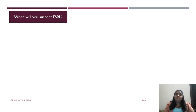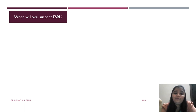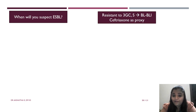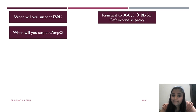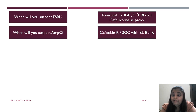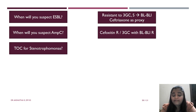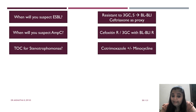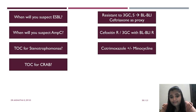That concludes the guidance. Now for a rapid fire summary: When will you suspect ESBL? When resistant to third generation cephalosporins but sensitive to BLBLIs — ceftriaxone can be used as a proxy to suspect ESBL. When will you suspect AmpC? Resistant to BLBLIs with resistance to cephalosporins, or no synergy between third generation cephalosporins and BLBLIs. Treatment of choice for Stenotrophomonas: cotrimoxazole — monotherapy for mild infection, or combination with minocycline for moderate to severe. Treatment of CRAB or carbapenem-resistant Acinetobacter baumannii: for moderate to severe infection, triple combination of high-dose extended-infusion meropenem plus ampicillin-sulbactam plus minocycline; for mild infection, monotherapy with ampicillin-sulbactam.